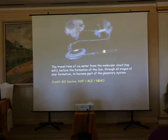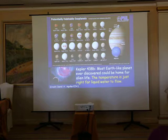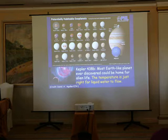This means that the solar system is not an exception — it is simply one of many star systems with planets. Moreover, thanks to Kepler, we detected this planet which is the most Earth-like planet ever discovered and could be home for alien life, because the temperature is just right for liquid water to flow. Kepler looked at a distance of 3,000 light years.